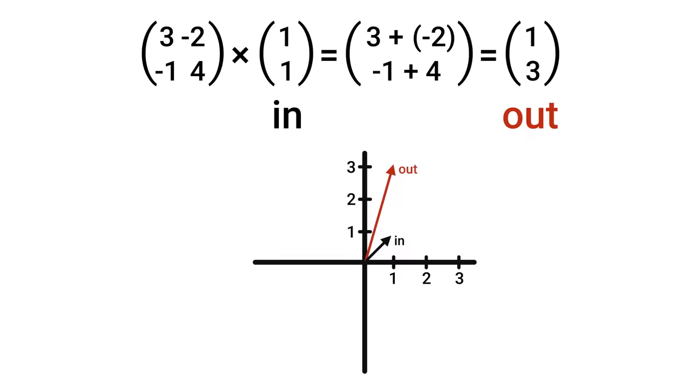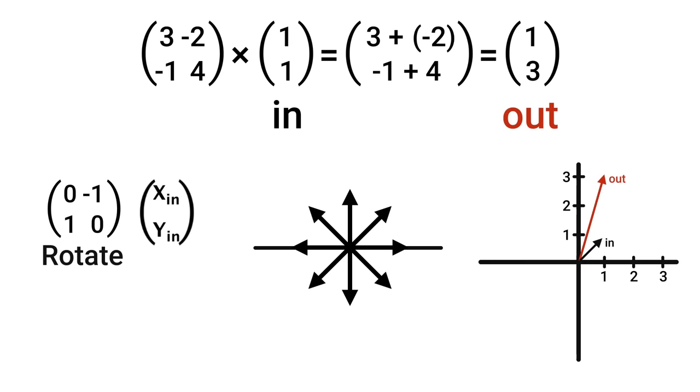Now some matrices are much simpler, like this one here just rotates. Put a vector in, multiply by the matrix, and out will come the same vector rotated 90 degrees counterclockwise. This matrix on the other hand will just scale. Any vector that goes in comes out twice as long.